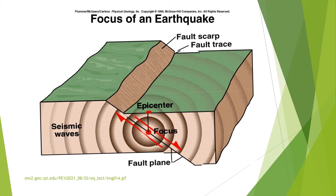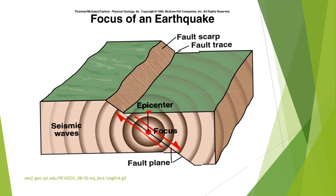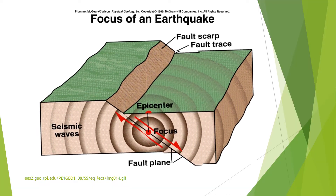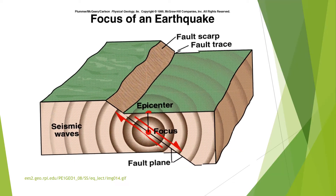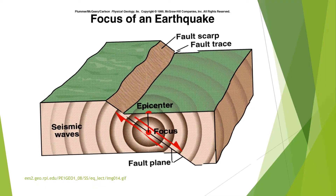Earthquakes occur along the breakage on the lithosphere called a fault. When these pieces of the ground move, their movement is not smooth. Friction against these rocks causes them to get stuck. This causes pressure to build up, and when this pressure is released, an earthquake occurs.